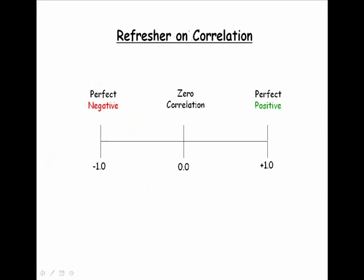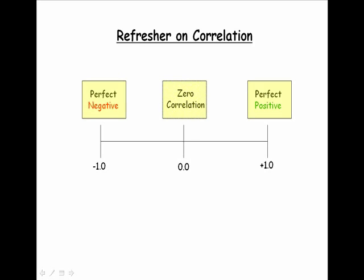Now let's have a refresher on correlation. We know what it means when two things are correlated — it means there's a relationship. There can be a positive relationship, a positive correlation, or there could be a negative relationship, a negative correlation. At the two ends of the spectrum, we have perfect positive correlation, where the coefficient is positive 1.0, and at the other end, perfect negative correlation — not only a negative relationship, but a perfect negative one. Right in the middle, we could have zero correlation.